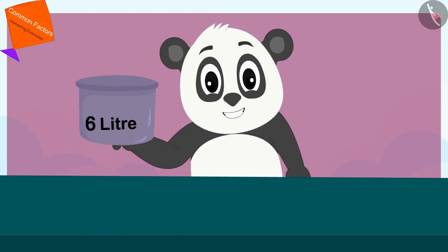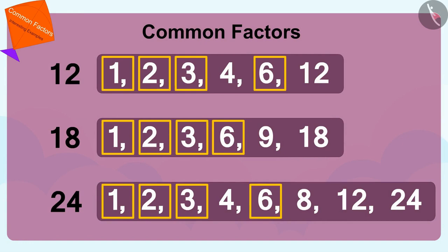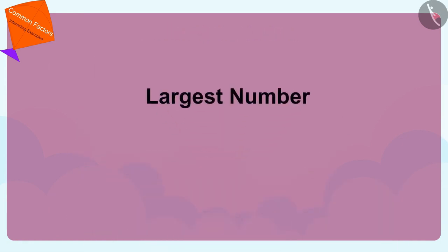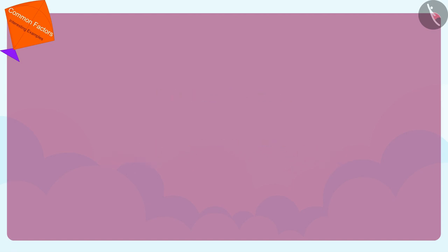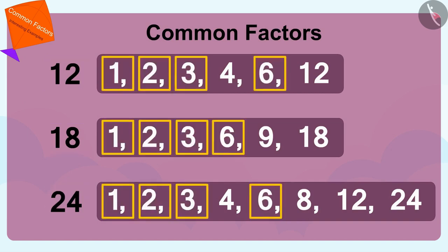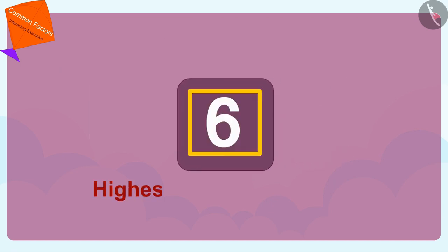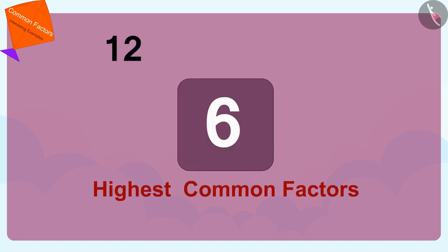Thought Golu! Children, out of the common factors of numbers, the largest number is called the highest common factor. Out of all the common factors of 12, 18 and 24, 6 is the largest. Therefore, we can say that 6 is the highest common factor of 12, 18 and 24.